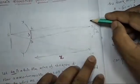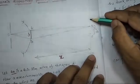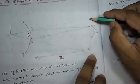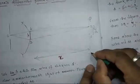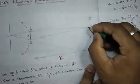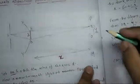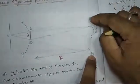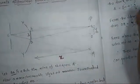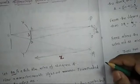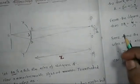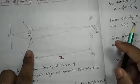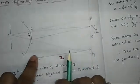The diffraction pattern is observed between P and M on the screen. This P to M portion on the screen is called the shadow region. Above P and below M is called the illumination portion. The slit is kept at a distance X from the screen. This is the experimental arrangement.